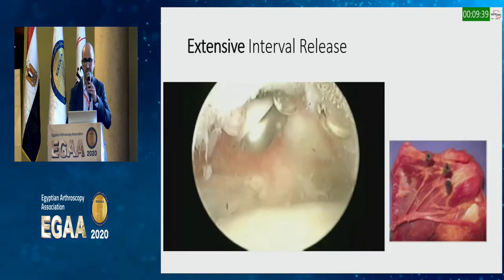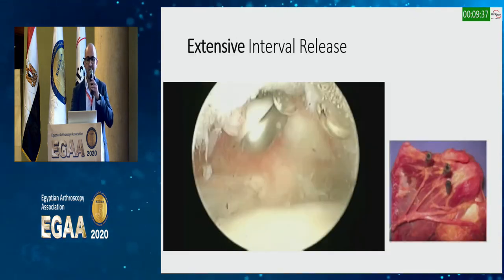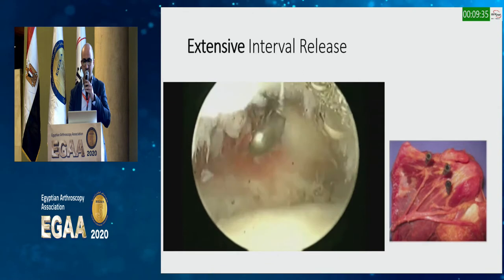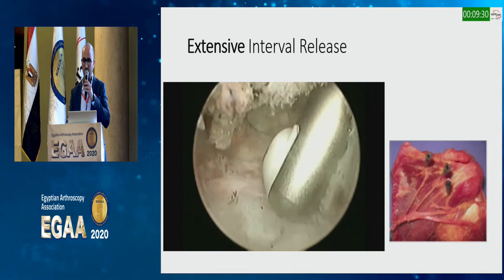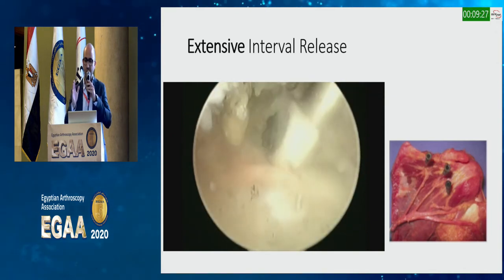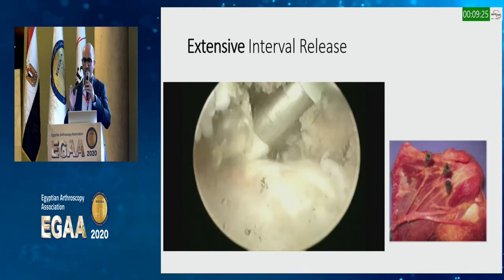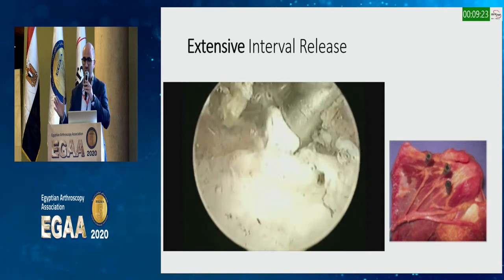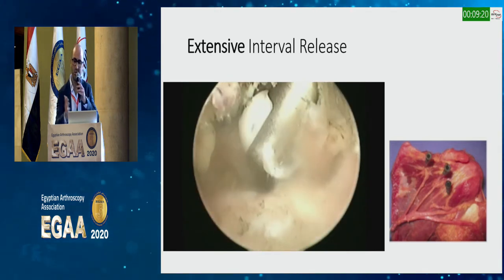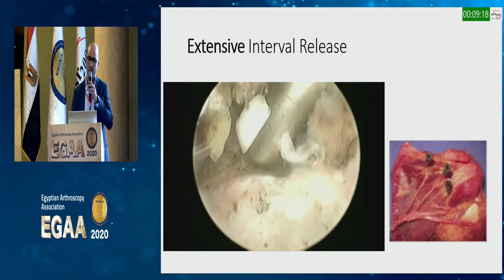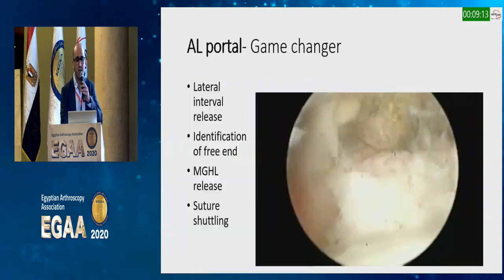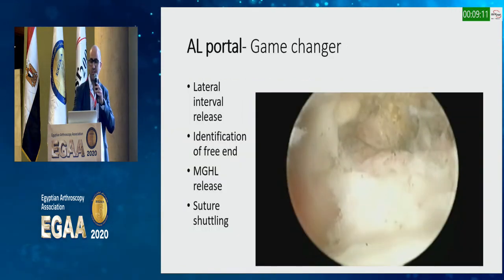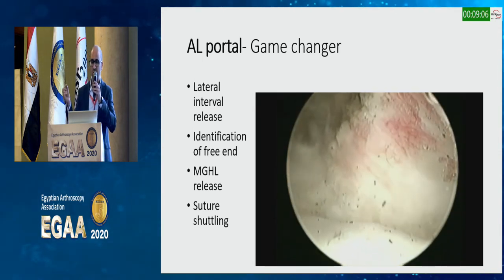The biceps tenotomy clears up the rotator interval so I can work much more freely. Then I do an extensive interval release through my anterior portal, releasing the whole rotator interval all the way to the coracoid to clear up the interior space. Do not go medial to the coracoid, as you can injure important neurovascular structures.